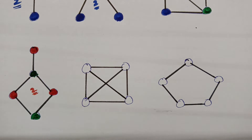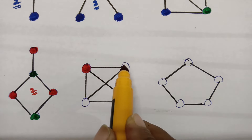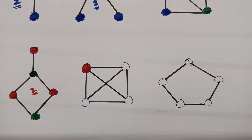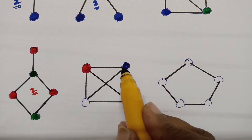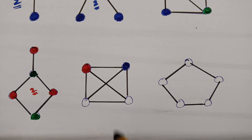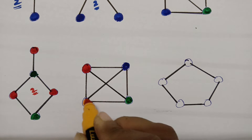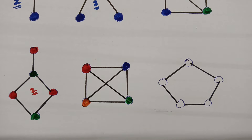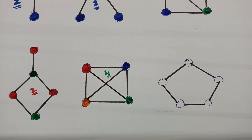For this next graph, I start with red. Red can't be used on adjacent vertices. I then add blue, avoiding blue on its adjacent vertices. Then green, and finally a fourth color where red, blue, and green are all excluded. Therefore the chromatic number for this graph is four.